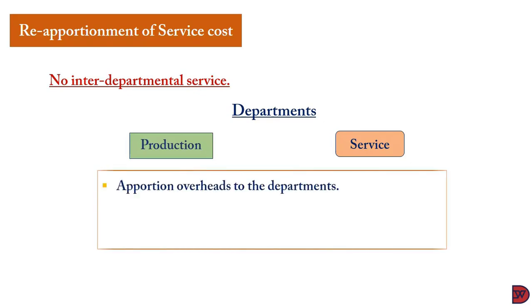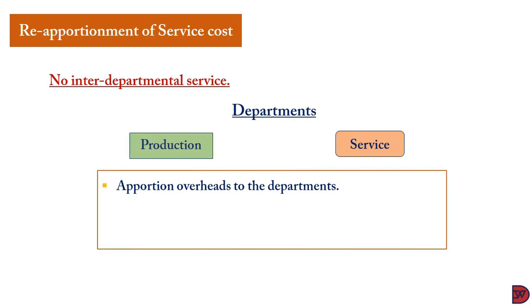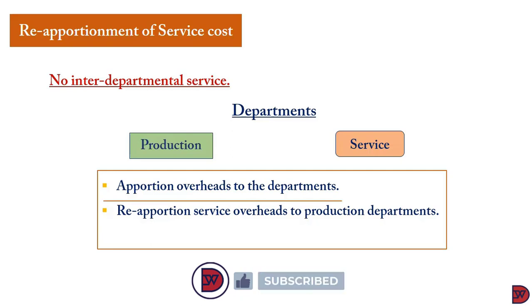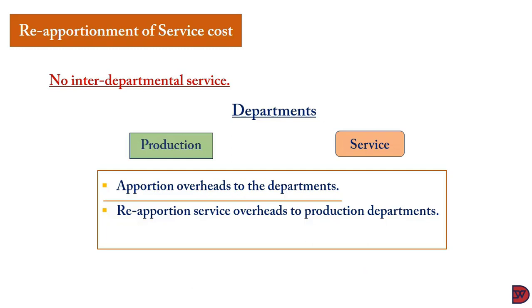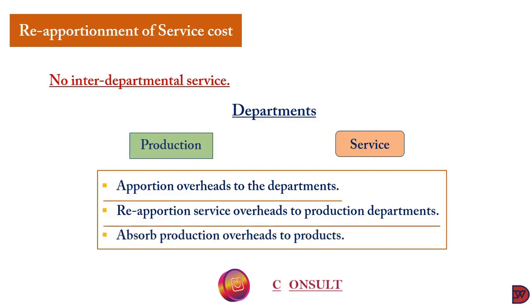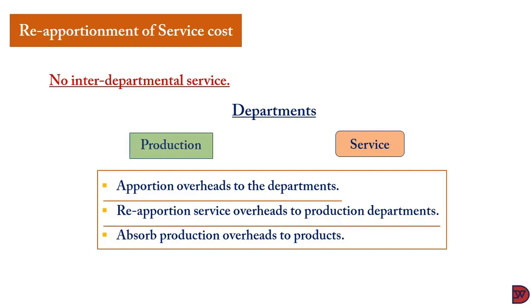If they do not serve each other, we will first apportion the overheads to the respective departments — both production and service. Then the apportioned service cost will be reapportioned onto the departments that they serve. After that, the reapportioned cost plus earlier apportionment will be absorbed onto the production unit to arrive at a cost per unit.